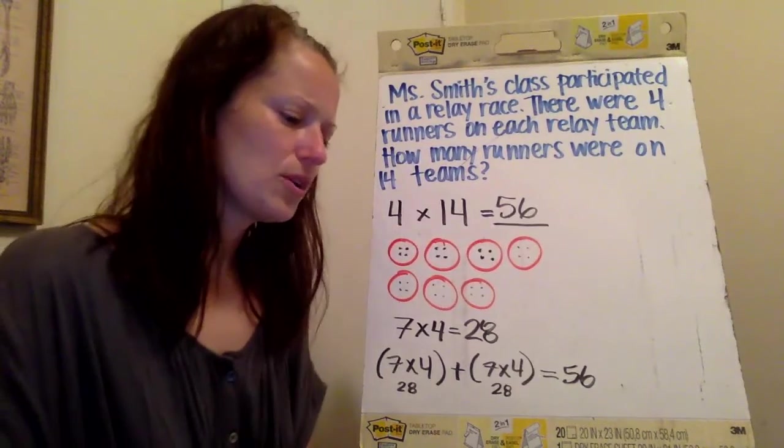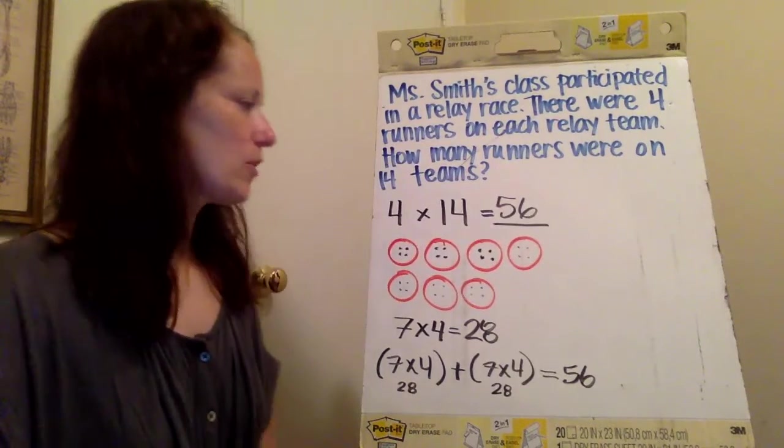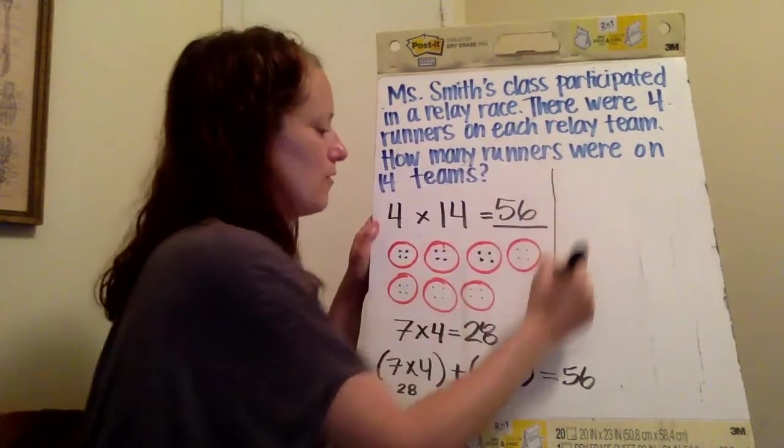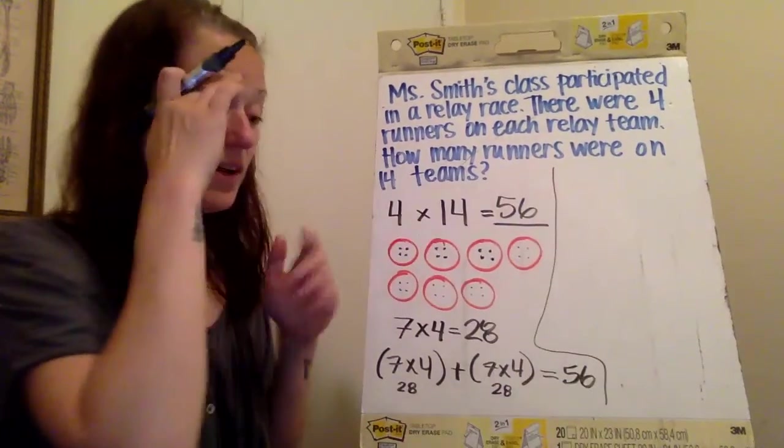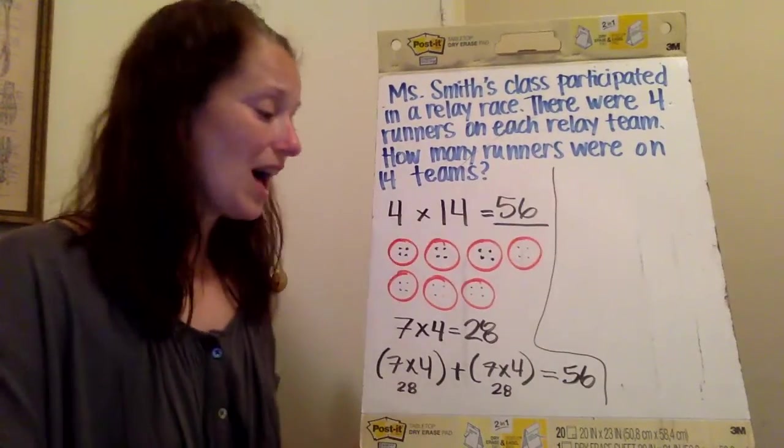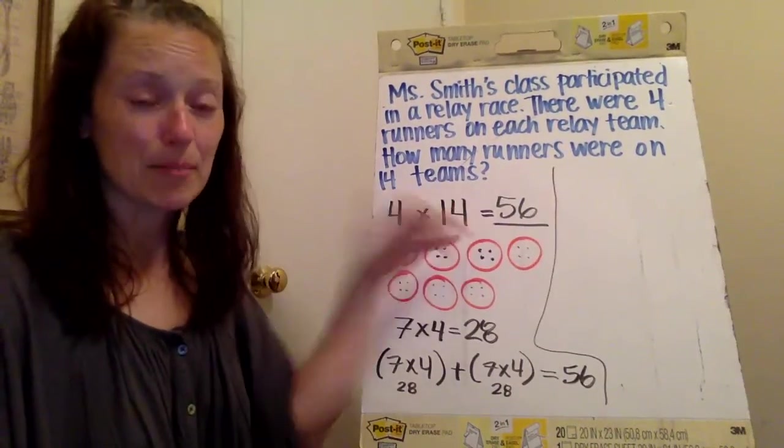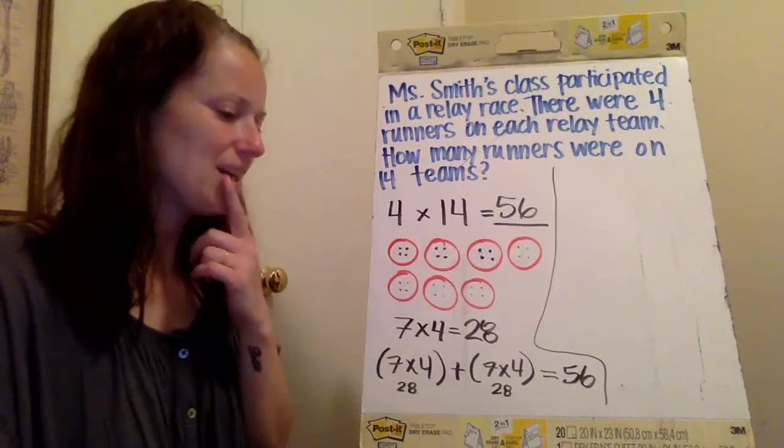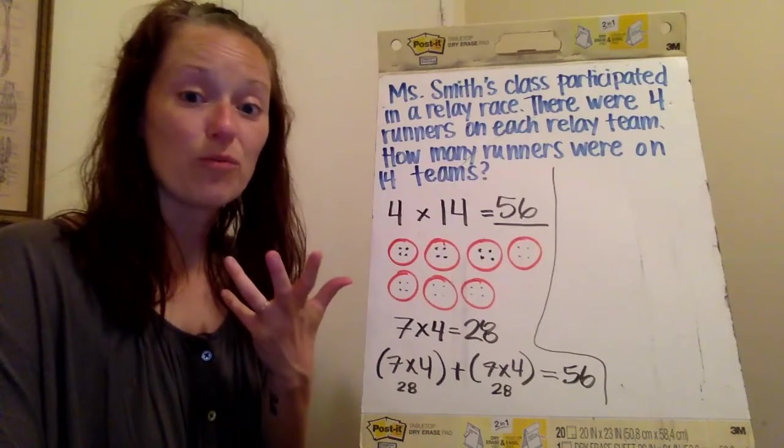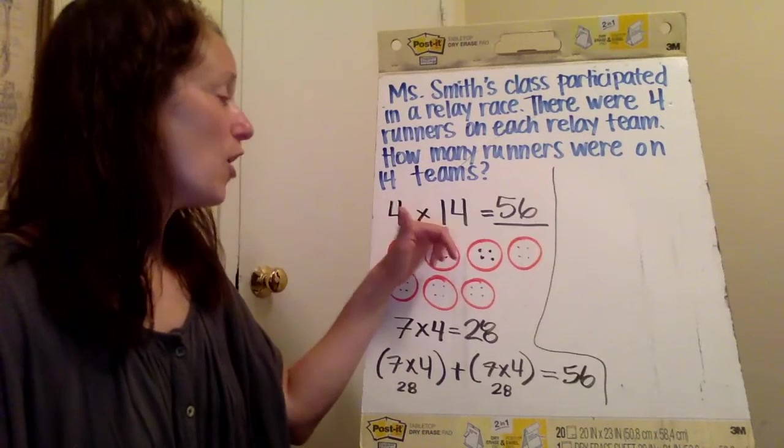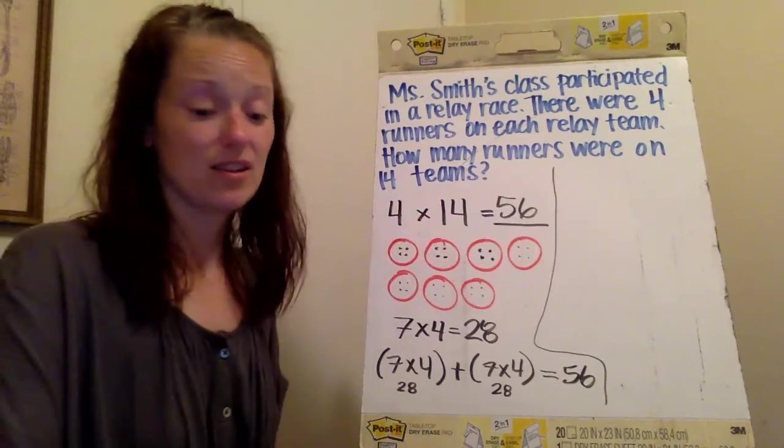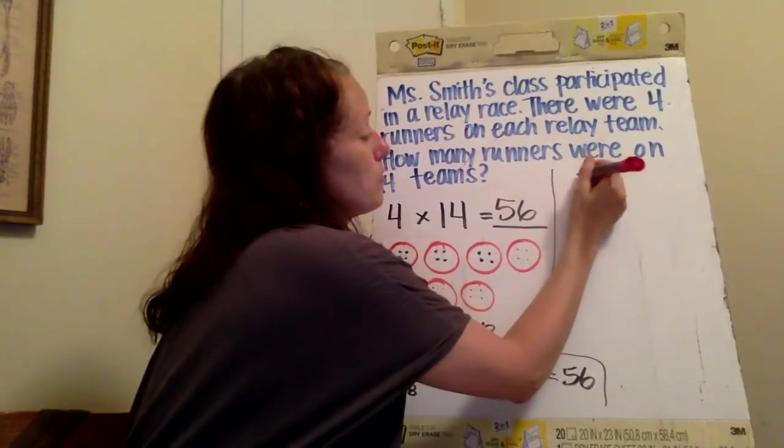So I could do this one other way. There's one other way that I might do this. So I'm going to still break this up, but I'm going to break it up a little bit differently because I know what 10 times four is. So I'm going to start off with 10 groups of four.